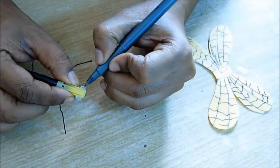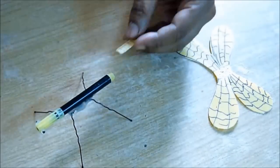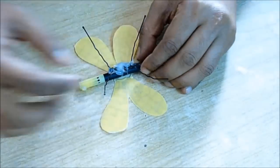Draw the eyeballs, stick the tail and the wings on top of the insect.